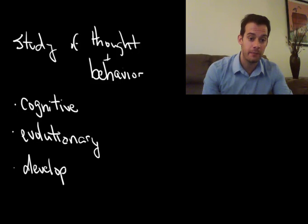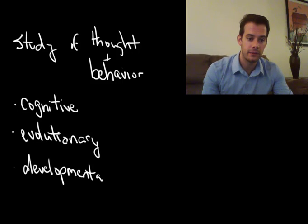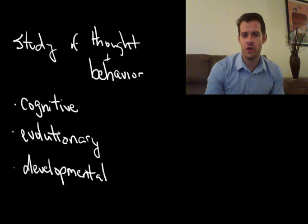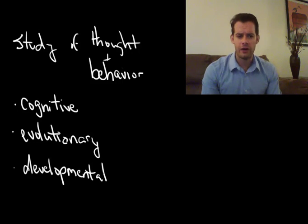We also have developmental psychology. And developmental psychologists also want to know about how we change over time, but they look at a much shorter time period, the course of a life span. So how do people change from infancy to adolescence, or from adolescence to adulthood?